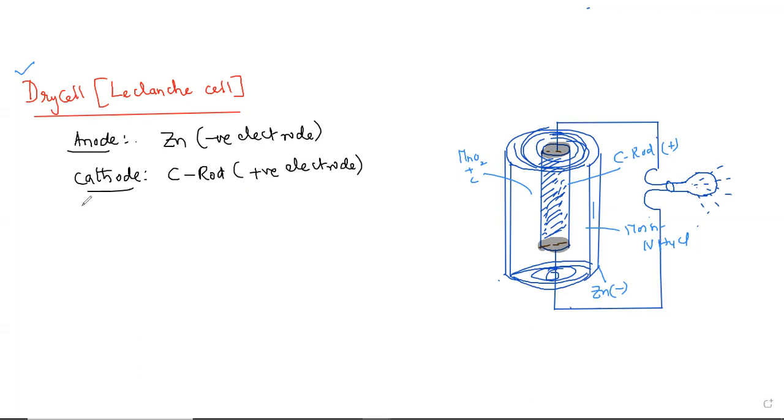The space between anode and cathode contains moist NH4Cl, and this graphite rod is surrounded by manganese dioxide plus carbon powder. So, this is the actual idea about this one. In this, we are going to see exactly what type of equations are possible.